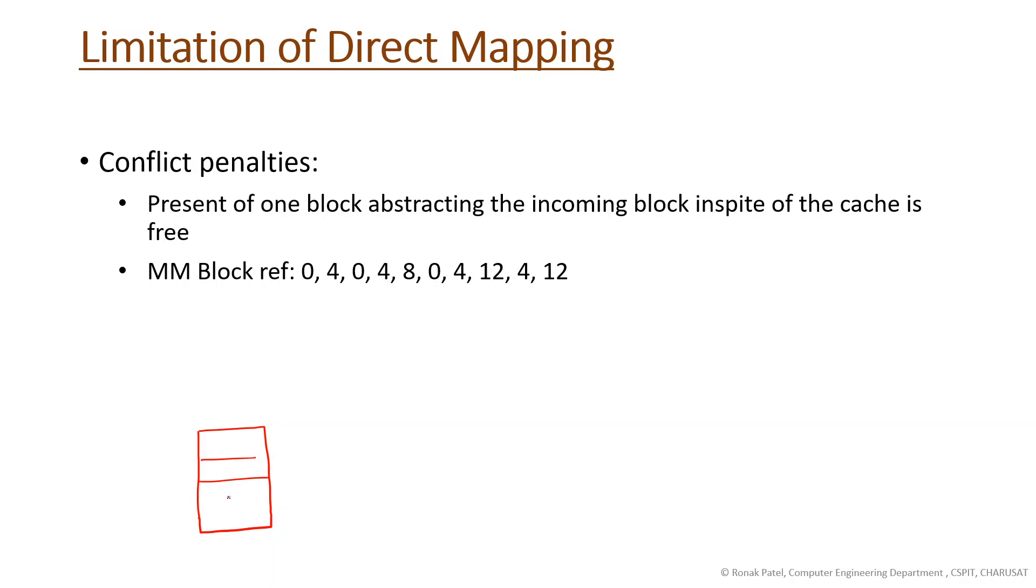We perform modulo four operation on main memory blocks. Based on the result, blocks can be placed in positions 0, 1, 2, or 3. When these blocks need to be placed in cache memory, we apply the modulo four operation which gives a result. For example, blocks that give result 0 are all candidates for cache block 0.